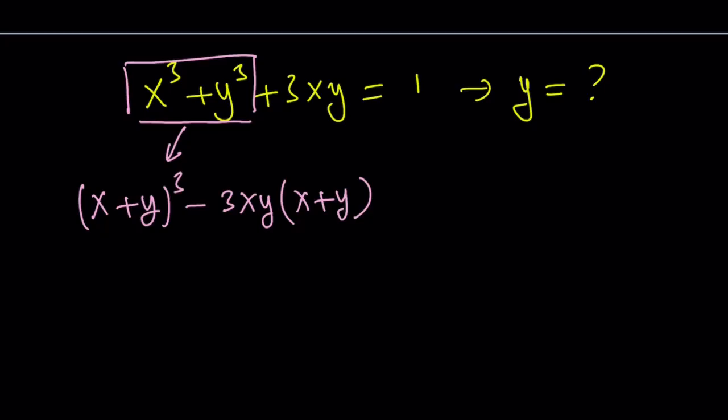So, that is the x cubed plus y cubed part. Let's go ahead and add 3xy to this and set it equal to 1. But let's go ahead and subtract 1 from both sides and set the whole thing equal to 0. So, we got this interesting cubic expression. Let's go ahead and factor it by grouping.